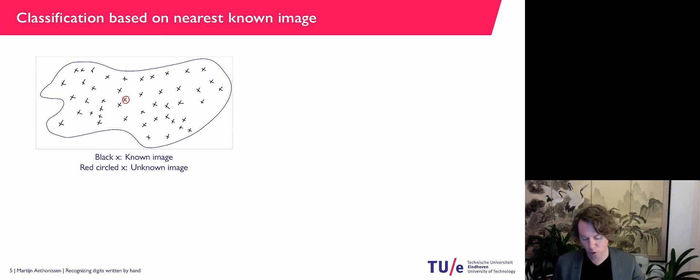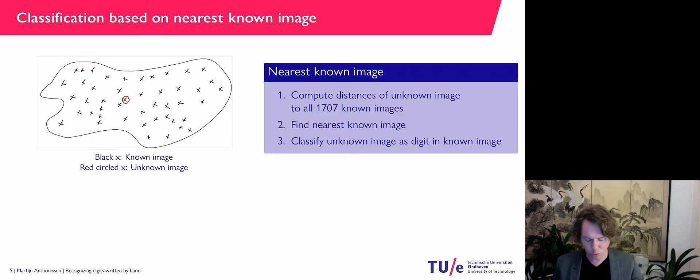So as an algorithm, we always like to write things down as algorithms. I'm going to compute the distance of my unknown image. So this little red cross here that's circled to all 1707 known images.